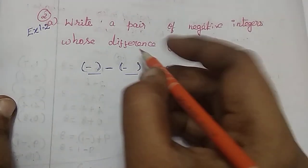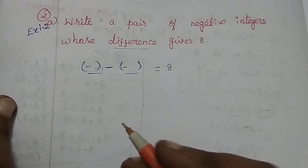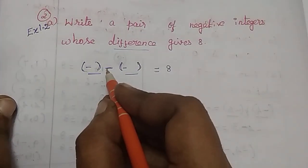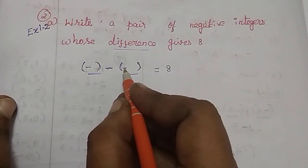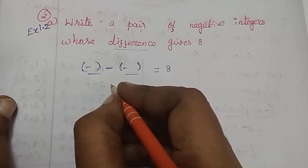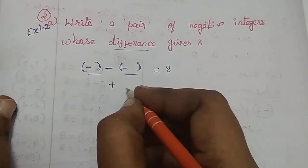When we find the difference, it means subtraction — minus. So minus minus, these two together in multiplication give: minus into minus equals plus.